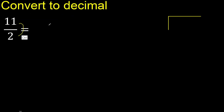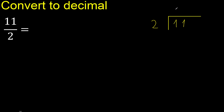11 divided by 2. 11 is not less, therefore 2 — multiply by which number is nearest to 11 but not greater. Multiply by 6 is 12, 12 is greater. Multiply by 5 is 10, is not greater. Subtract, remainder is 1.